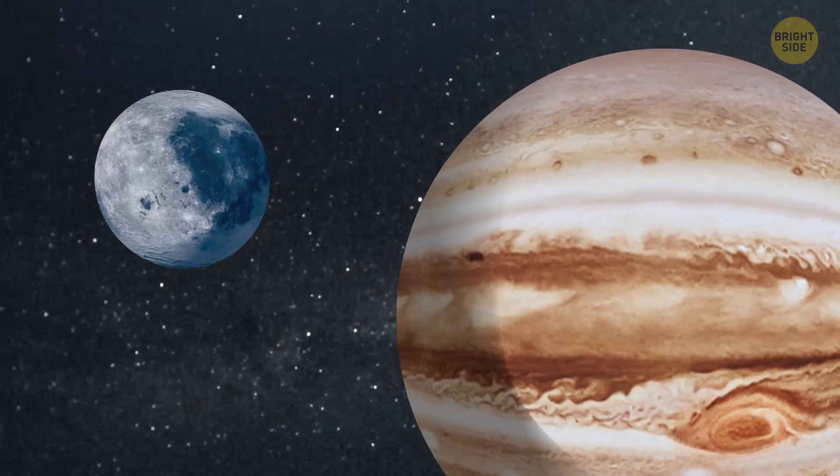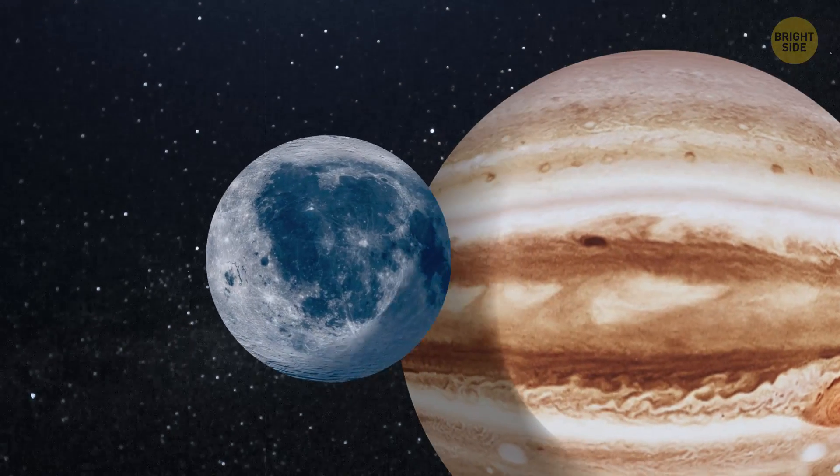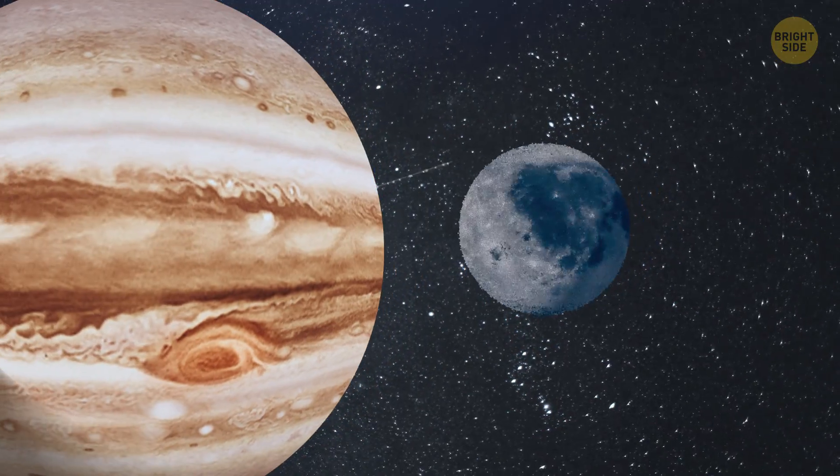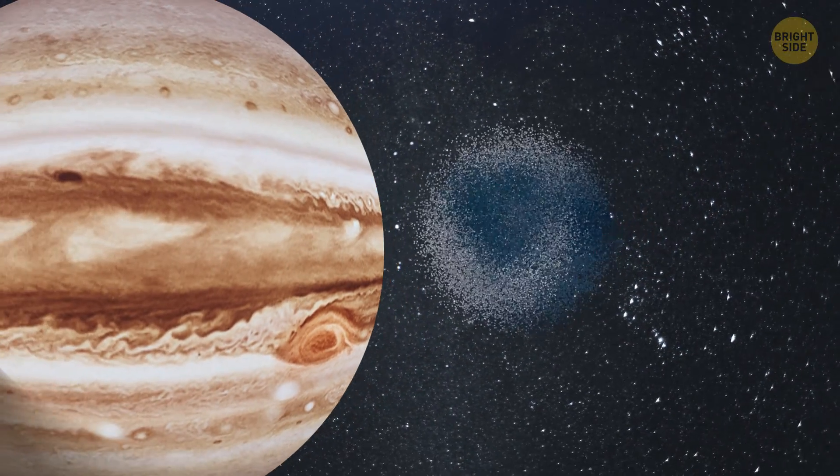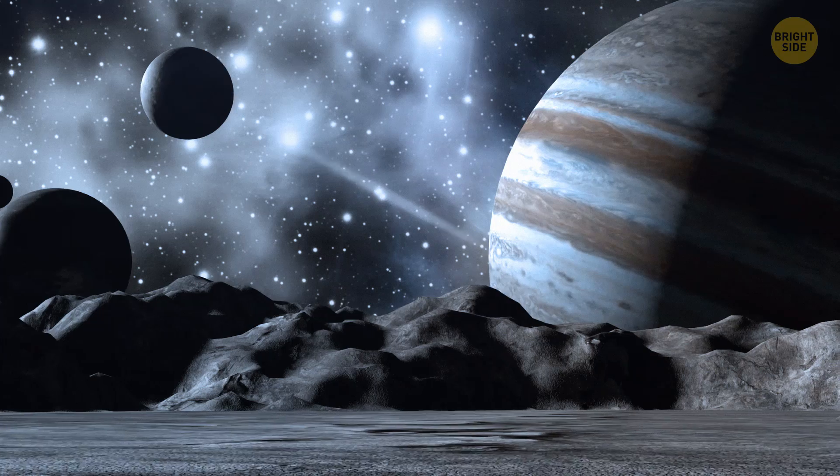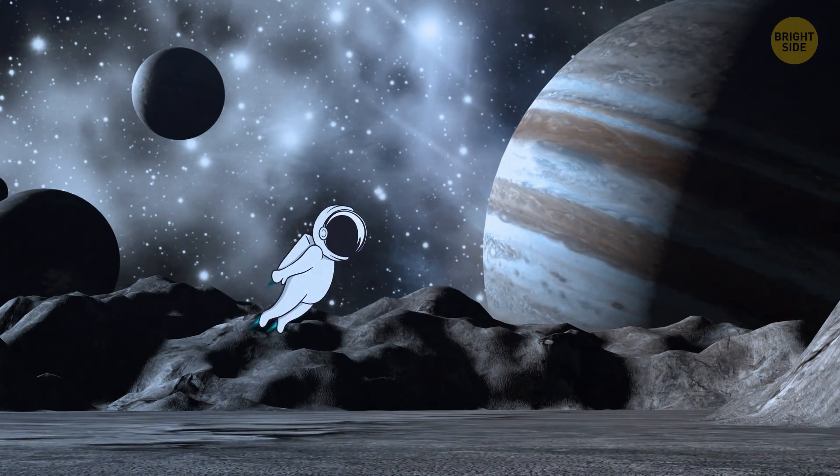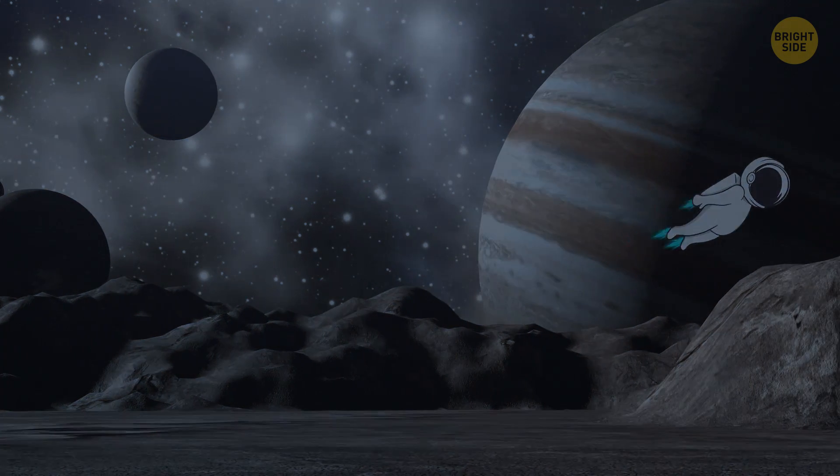But if the little world only grazed the gas giant rather than hit it directly, it might have become trapped and gradually disintegrated in Jupiter's atmosphere. Unsurprisingly, in either case, the smaller world came off a lot worse.